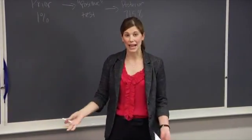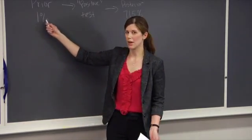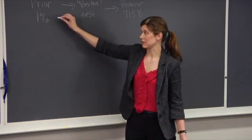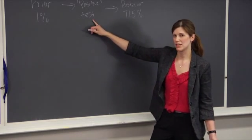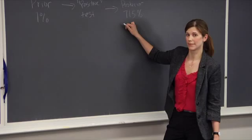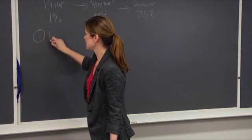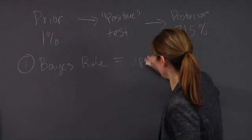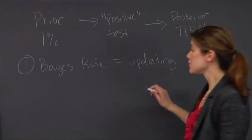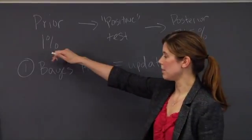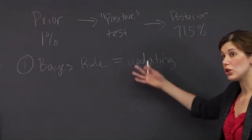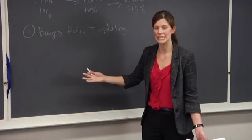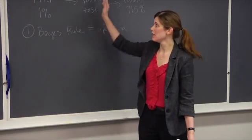Even though we have a test that's over 99% accurate, because we have such a low starting prevalence, there's only about a 72% chance that the patient actually has HIV even though they've observed a positive test. We're updating our beliefs — we previously thought it was 1%, then we observe a positive test result, and now we believe it's close to 72%. Bayes' rule is the most appropriate method for doing probabilistic updating: I start with a belief on the probability of an uncertain event, I observe some new information, and then I update my beliefs to reflect that new information. This is the key purpose of Bayes' rule, whether it's in medicine or any other industry.